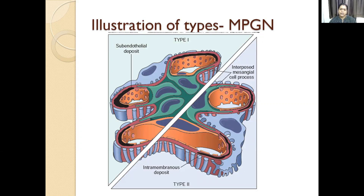We are illustrating membranoproliferative glomerulonephritis type 1 and type 2. In type 1, we are seeing endothelial deposits. In type 2, we are finding the intramembranous deposits.